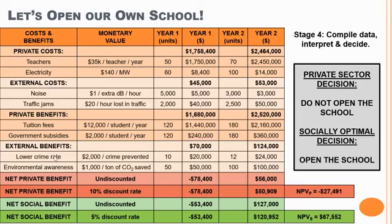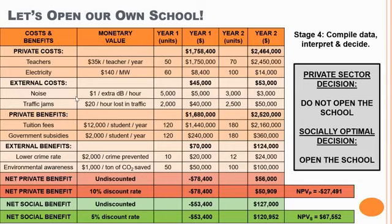I like this example because it summarizes many different concepts: private, external, and social costs and benefits; the issue of discounting; what a government would do versus what a private business would do. It really helps to understand the four main stages. What I usually do is introduce this example first, then ask students to come up with another example — like building a bridge, a hospital, a railway, or a stadium — and replicate the same type of matrix to think through costs and benefits, practice discounting, and so on.